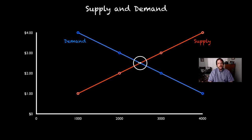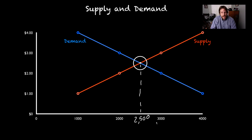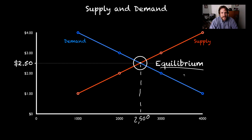Where these two lines intersect, the supply equals the demand — the number of Brussels sprouts grown equals the number purchased. You can see that ends up right around two thousand five hundred pounds, and that happens at a price of about two dollars and fifty cents. We call this point equilibrium — where the same number of products are made as bought. Equilibrium is where supply equals demand.